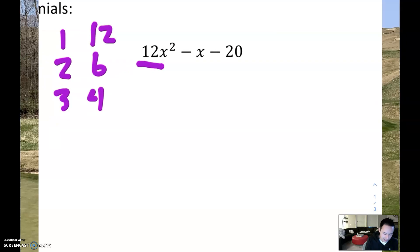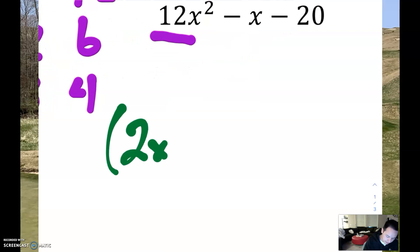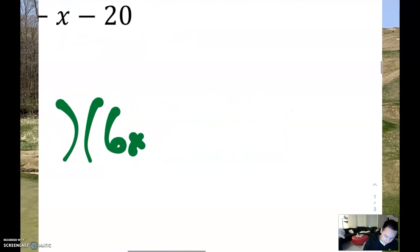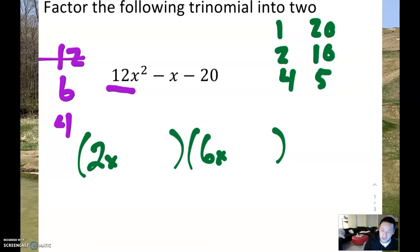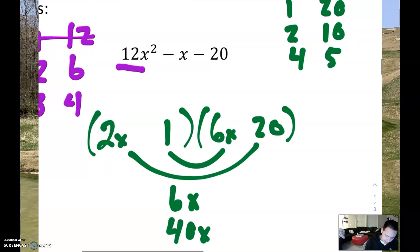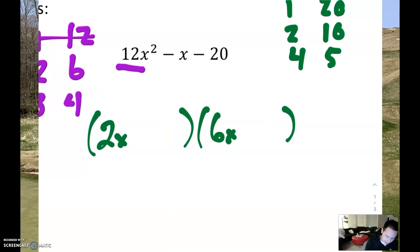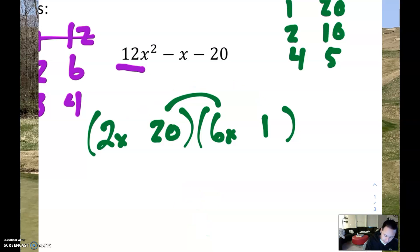It's not going to be 1 and 12, so let's try the next one — 2 and 6. We'll put a 2x here and a 6x here. Going through the list for 20: we have 1 and 20. This would make 6x and 40x — could those make a negative 1x? Nope. So let's try the other way around: 20 and 1 would give us 120x and 2x — could those make a negative 1? No. So it's not going to be 1 and 20.